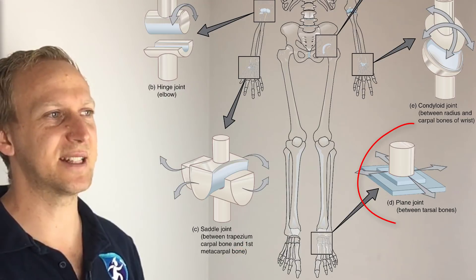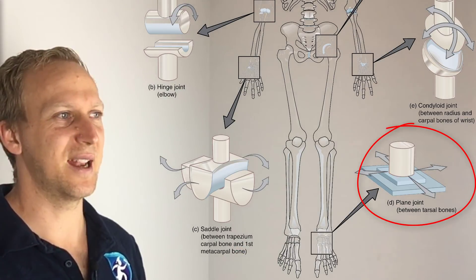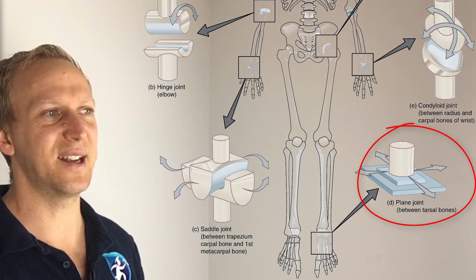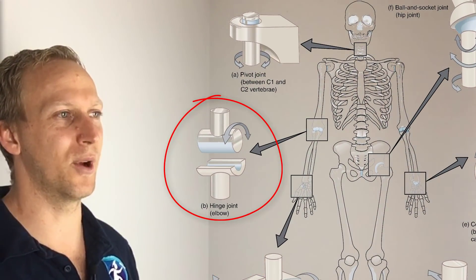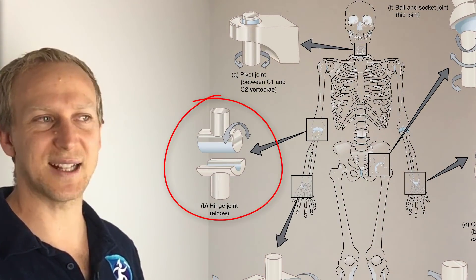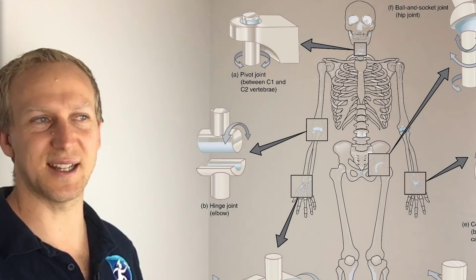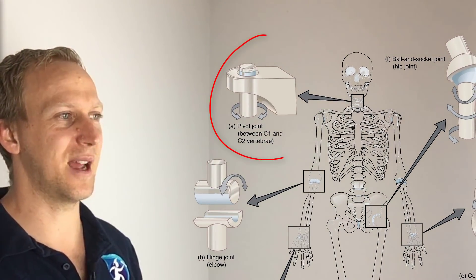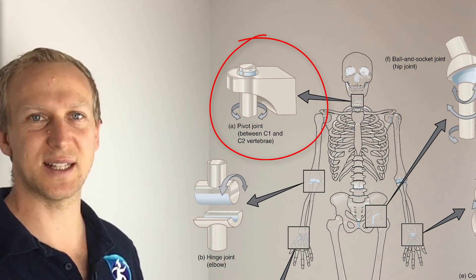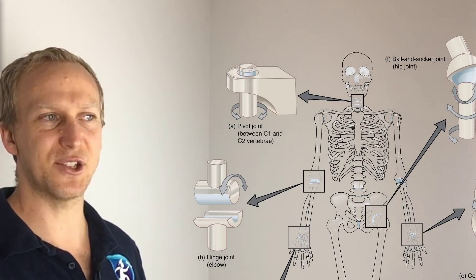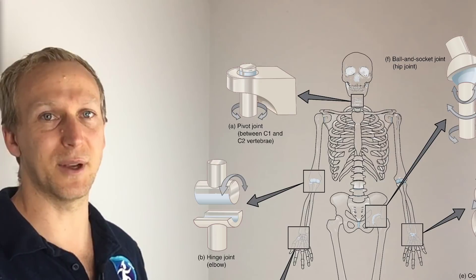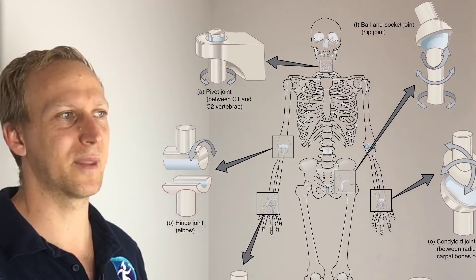Let's run through a few of the different types of joints. A plane joint, such as an intertarsal joint, allows limited gliding movements. A hinge joint, such as the elbow, allows movements along one axis for flexion and extension. A pivot joint, such as between C1 and C2 of the vertebral column, allows rotational movements and some bending, but not a lot.